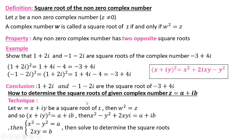How to determine the square roots of a given complex number Z = a + ib? Technique: let w = x + iy be one of these square roots. Then by definition, w squared equals Z. Equate to get x² − y² = a and 2xy = b. Then solve to determine the square roots.